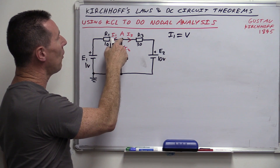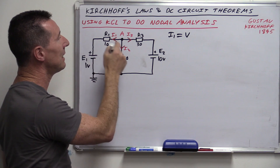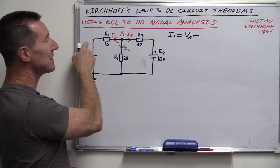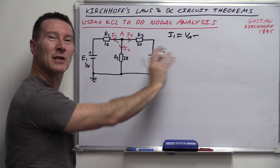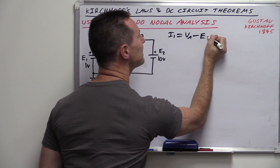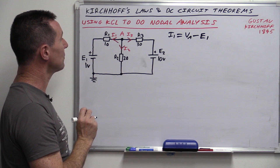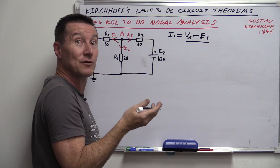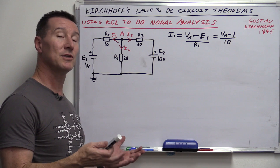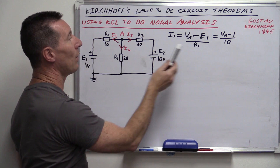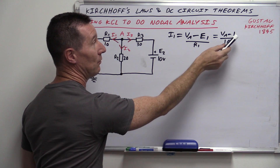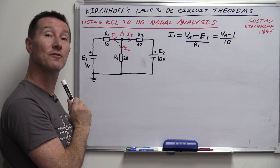We can plug in the numbers: R1 is 10 ohms, E1 is 1 volt. Dropping the units, the equation for I1 becomes (VA − 1) / 10. For I2, it's always referenced back to our reference point. The voltage at point A divided by R2 — since it's connected directly to ground, it's simply VA / R2, which is VA / 20. For I3, once again VA is the more positive side, so it's (VA − E2) / R3, which becomes (VA − 10) / 30. We now have the equations for all three currents.